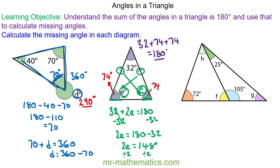Okay, to begin with I'm going to work out angle F because it lies along the same straight line as this blue angle. So angle F will be 180 minus 105, because together they add up to 180. So angle F will be 75 degrees.